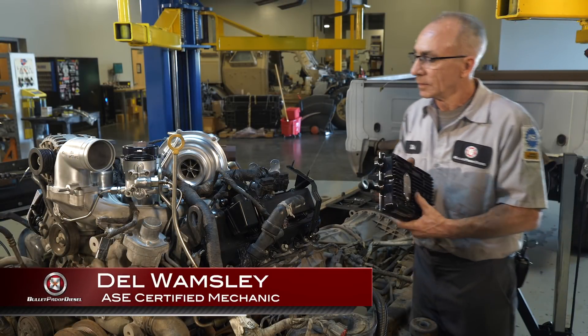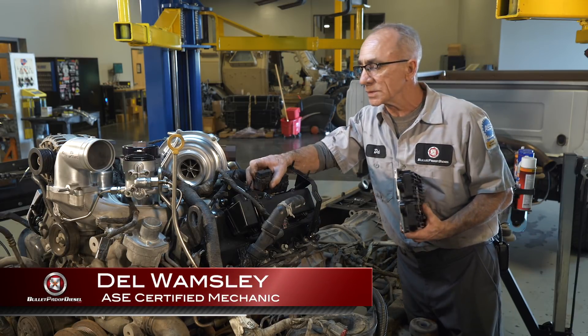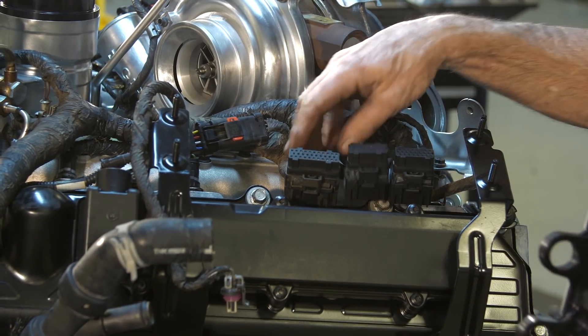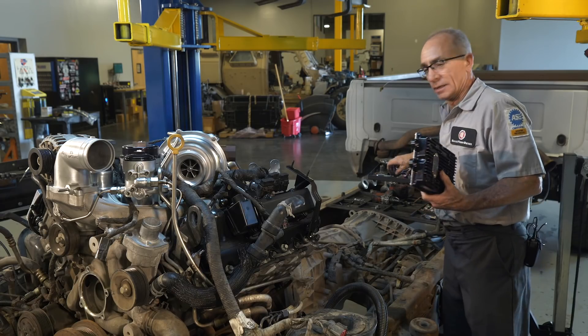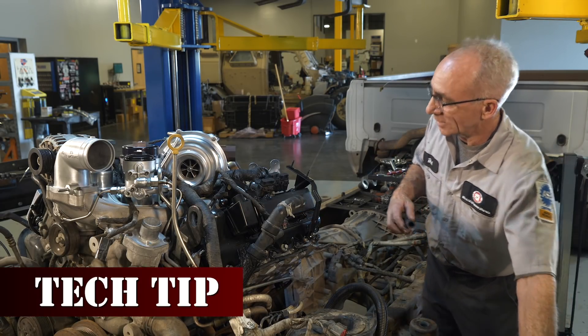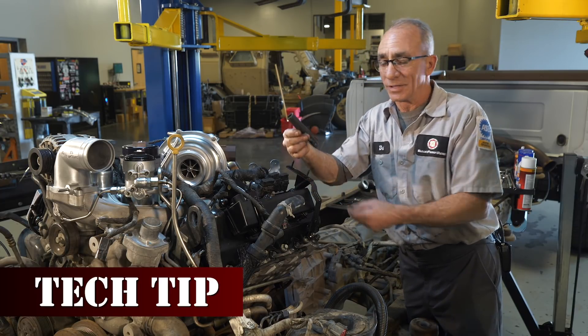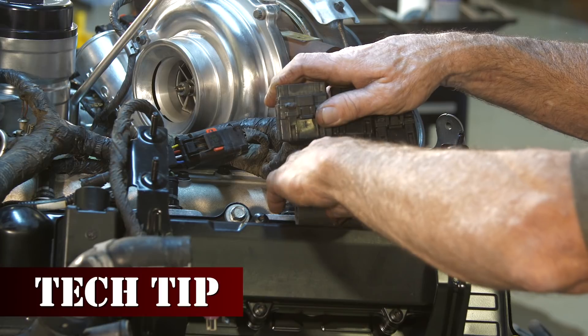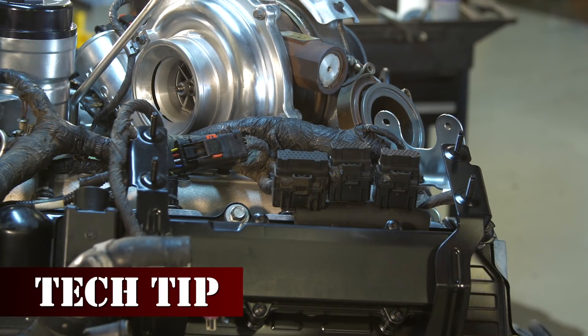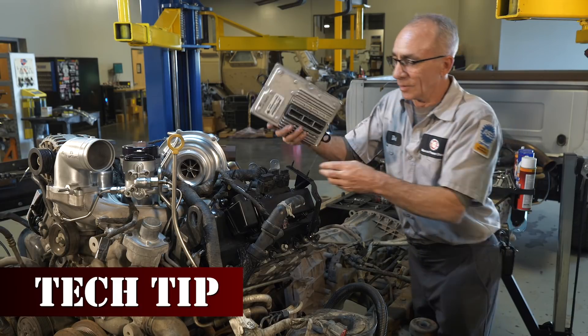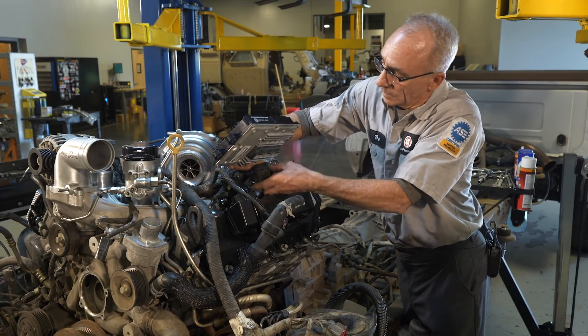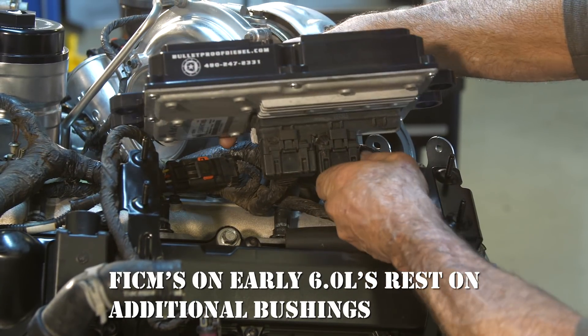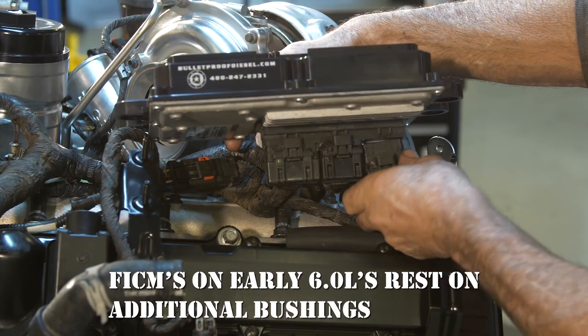Let's mount the FICM. On a lot of these trucks, especially the older ones, these locks will break. And the FICM connectors will tend to work their way out. A good way to repair that instead of replacing your whole harness, take a piece of 5-8 heater hose and just lay it on the valve cover underneath them. And they physically can't fall out once it's mounted. It's a lot cheaper than a new harness. Normally, you would hear them click and lock in, but these locks are broken.